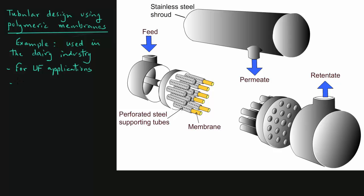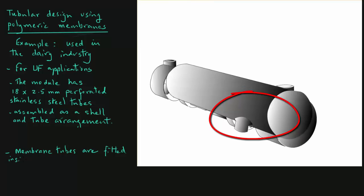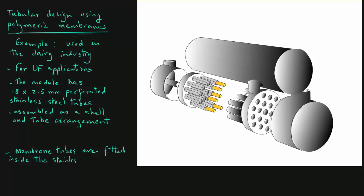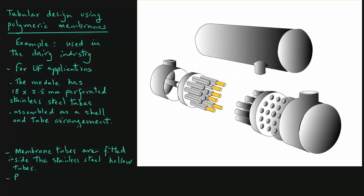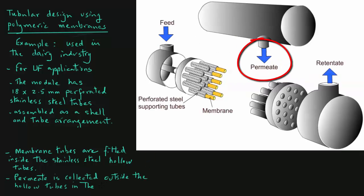In this case, a module is 18 by 2.5 millimeter perforated stainless steel tubes. These tubes are assembled in a shell and tube arrangement. In other words, a number of tubes inside a shell. The membrane tubes are fitted inside the stainless steel hollow tubes. That's how we have the shell and tube arrangement. And the permeate is collected outside the hollow tubes in the shroud that surrounds the tube arrangement.